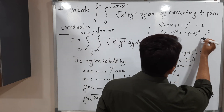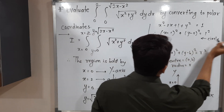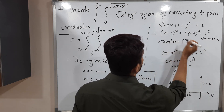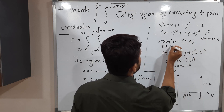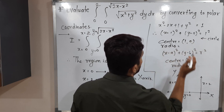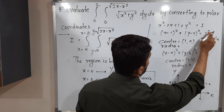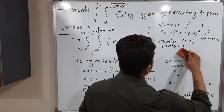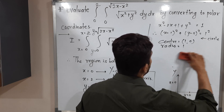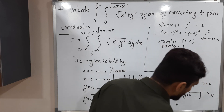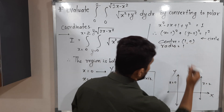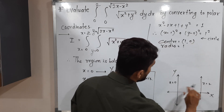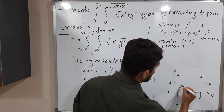This is a circle with center (1, 0) and radius 1. On the right-hand side we have 1² so the radius is 1. Let me draw a rough sketch of the circle.